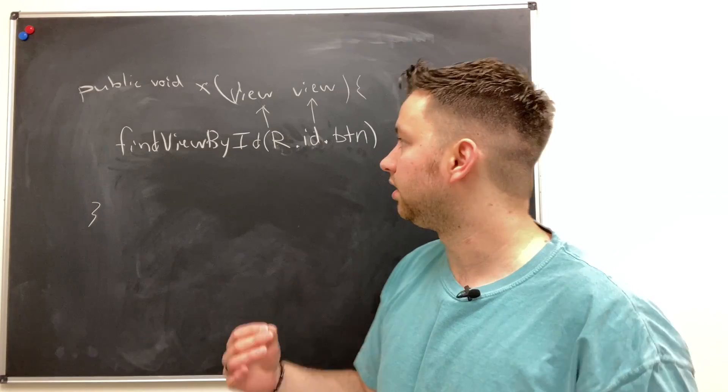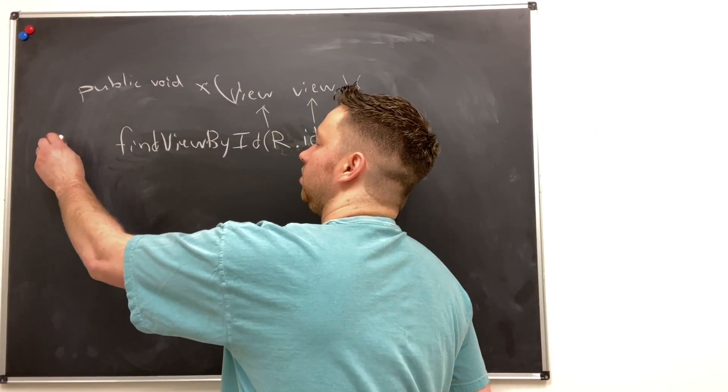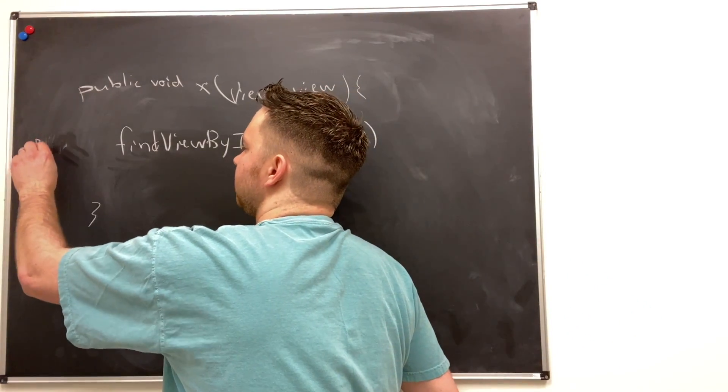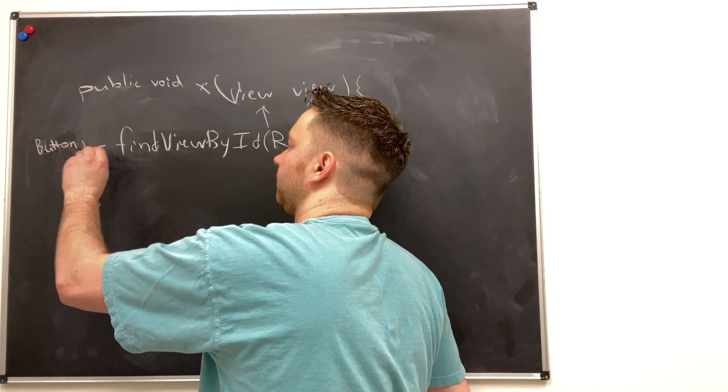That is going to return a view object so we would then assign this back to a view object, or in the case if it's a button we could assign it to a button like so.